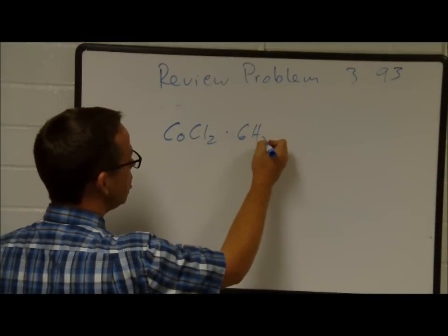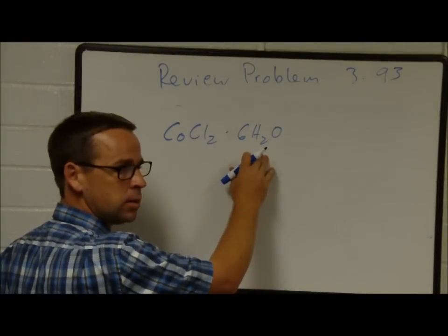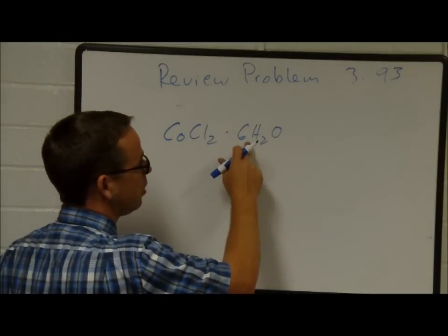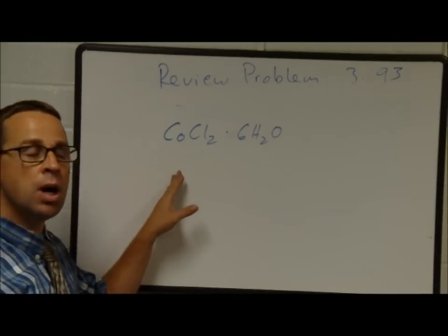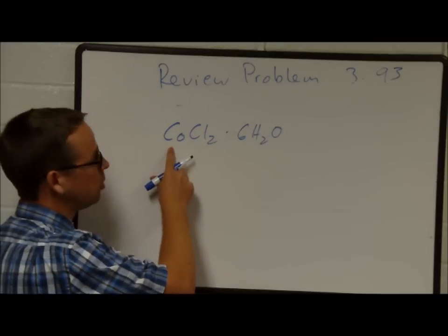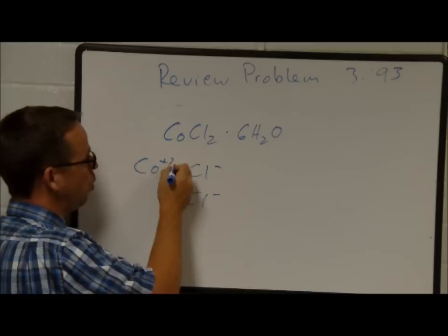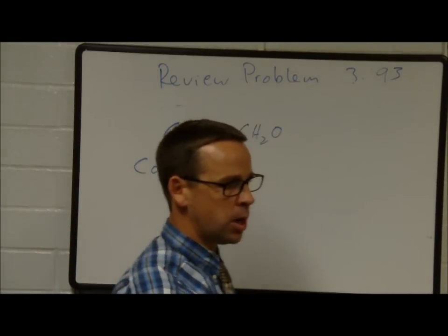CoCl₂·6H₂O: this is cobalt chloride hexahydrate. There are two Cl⁻ ions, so one cobalt must have a plus 2 charge. It is cobalt 2 chloride hexahydrate.